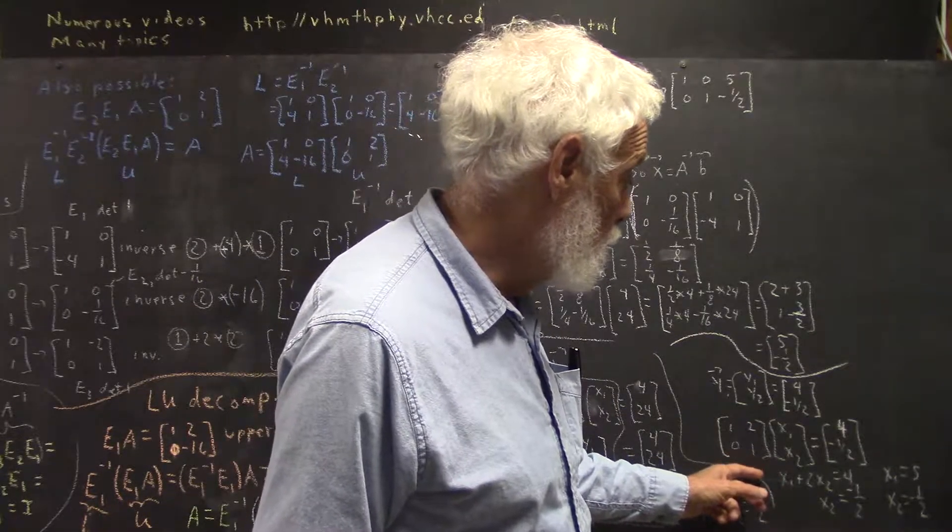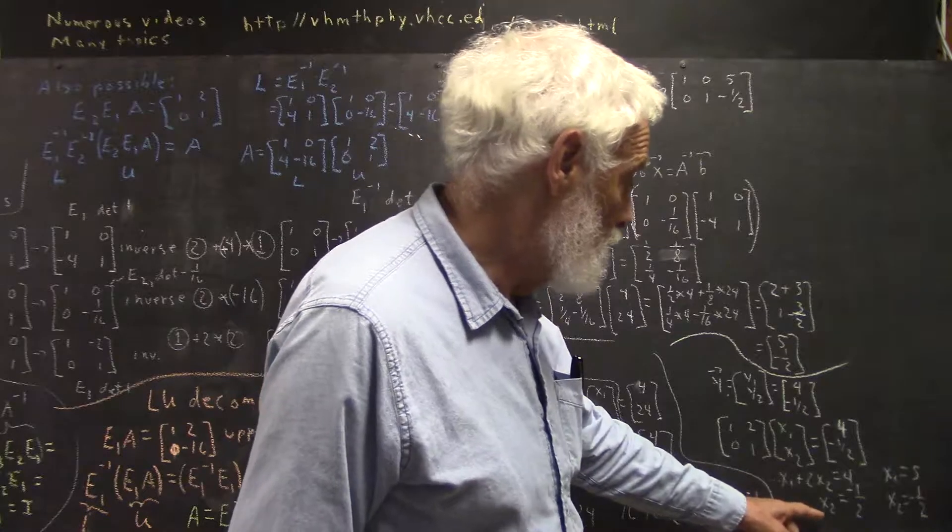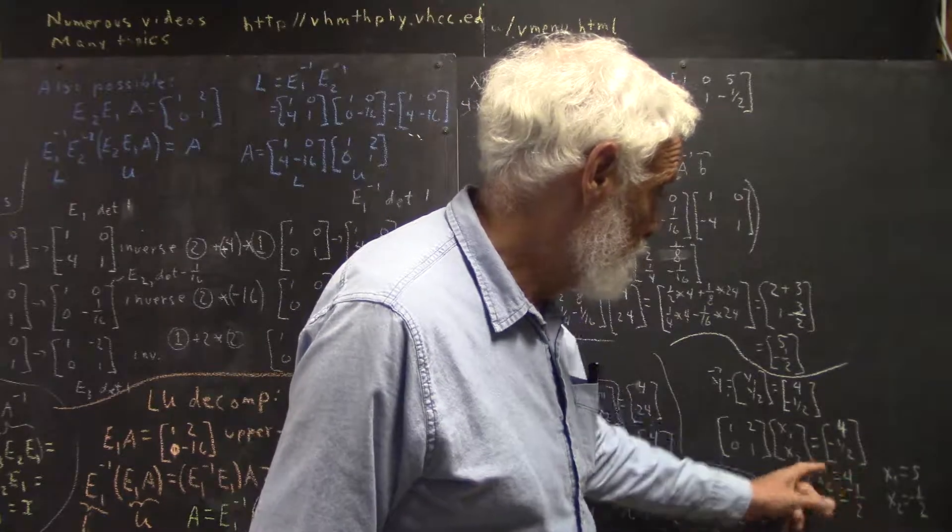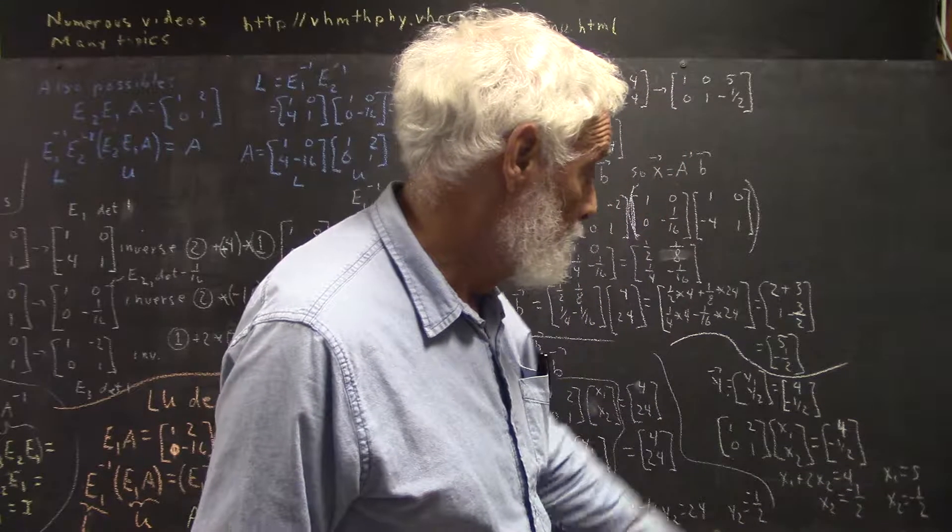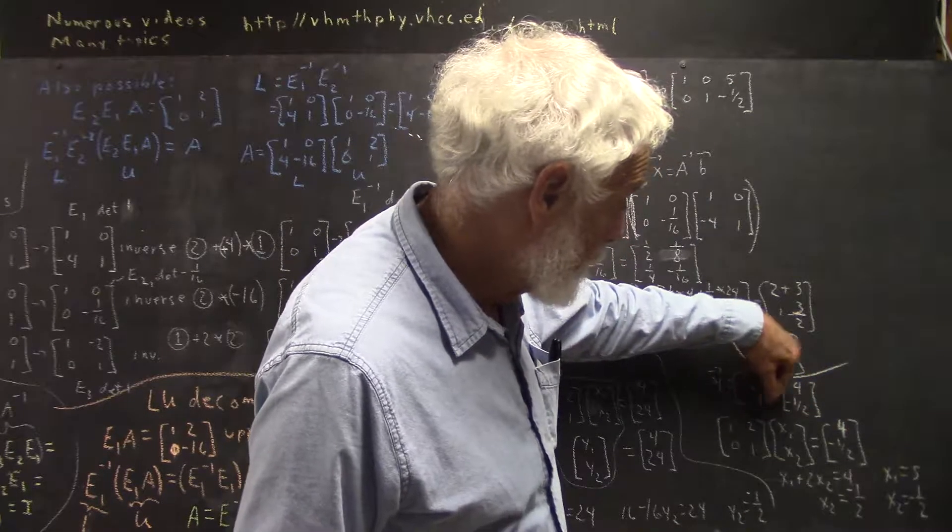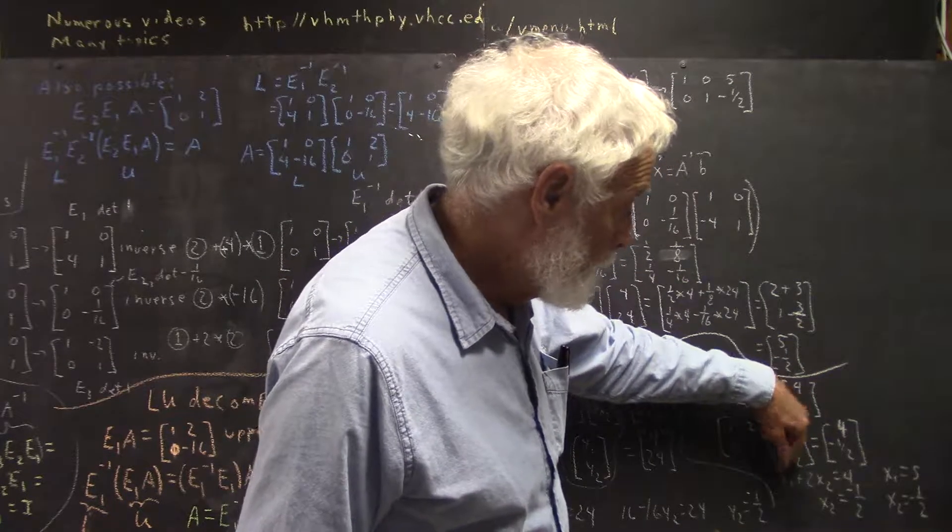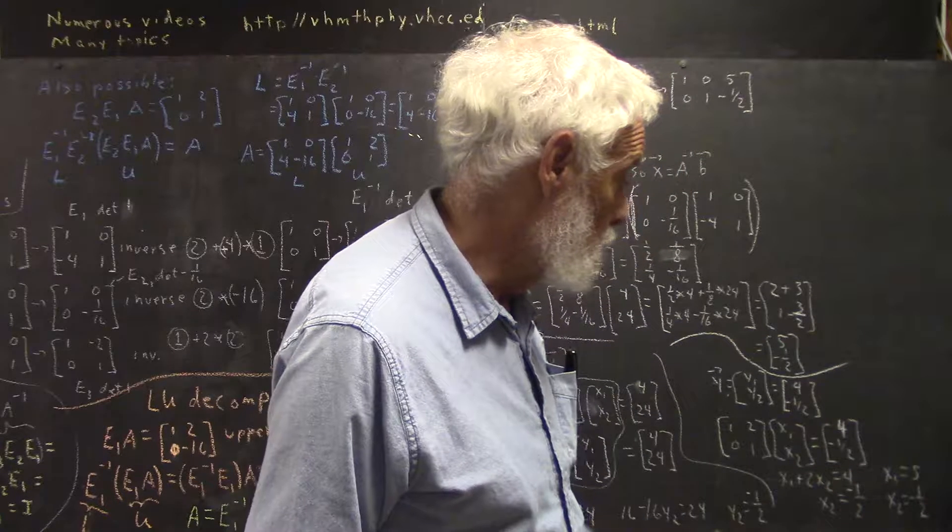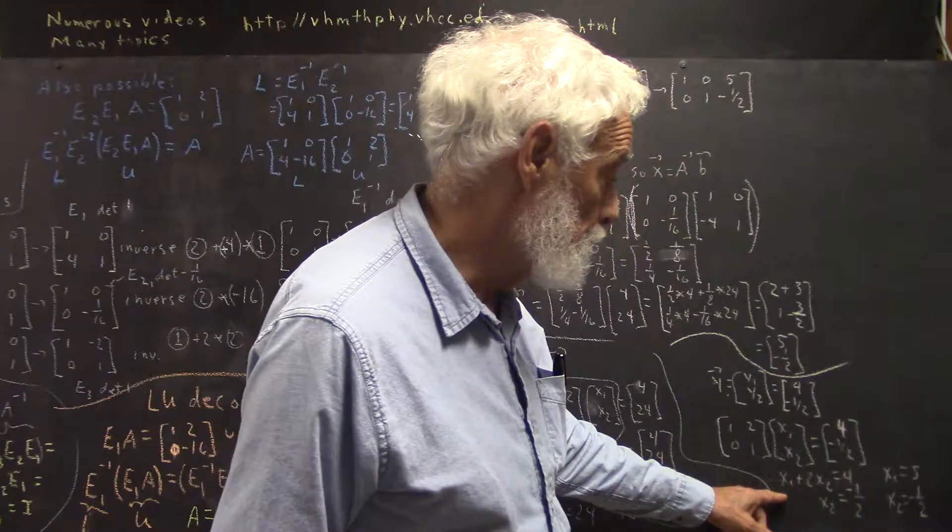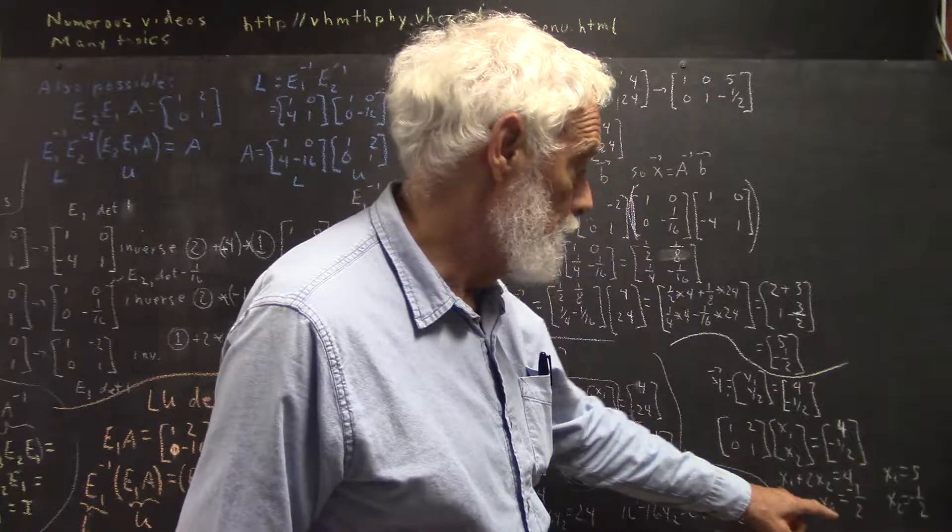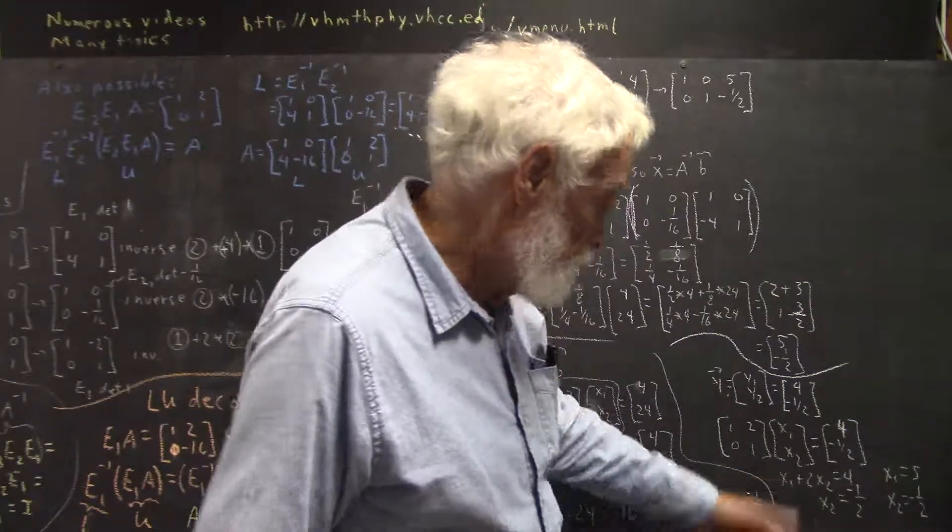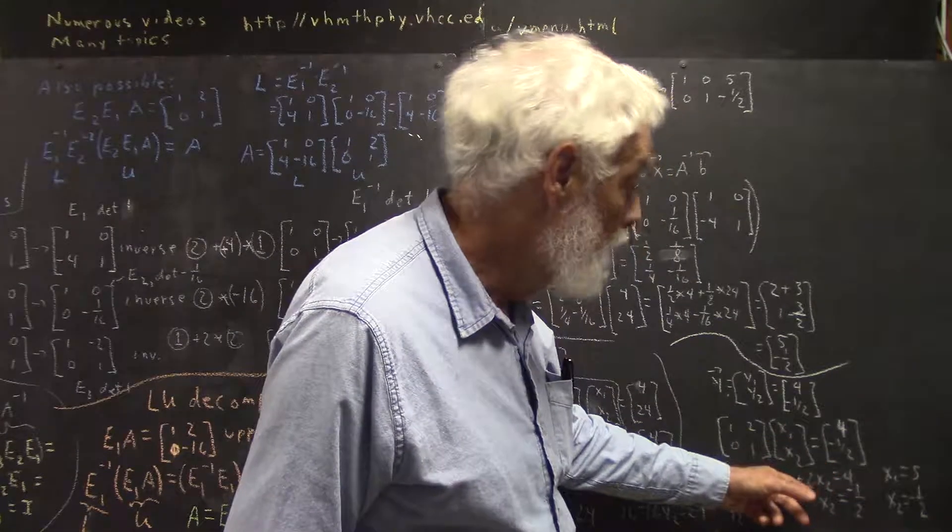And we easily solve this. How's it easy? Because we can use backward substitution. This 0, 1 here tells us that we've got X2 equal to negative 1 half. Plug that into the equation we get when we multiply the first row by the column, X1 plus 2X2 equals 4. And we get our solution for X1. And that is very easy. You should be able to do that easily in your head.